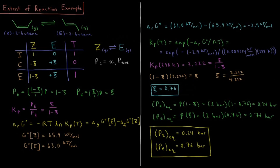If we build our ICE table here, we have the reactant Z, the product E, and the total pressure of the system. We have what their initial pressure is, what their change in pressure is during the reaction, and what their equilibrium pressure is going to be. We're going to assume that we start out with Z-2-butene at a pressure of 1 bar, and E is at a pressure of 0 bar.